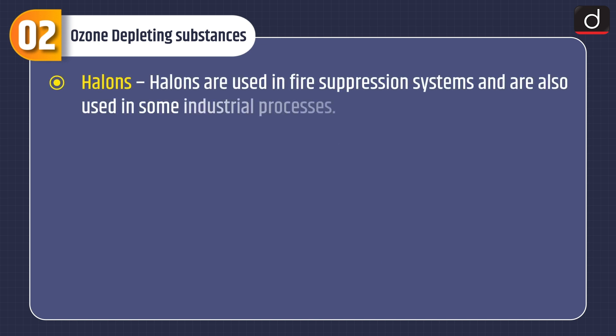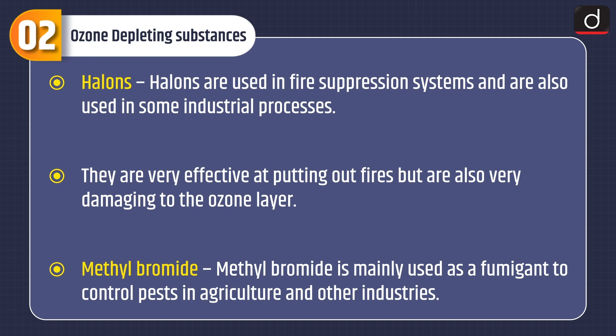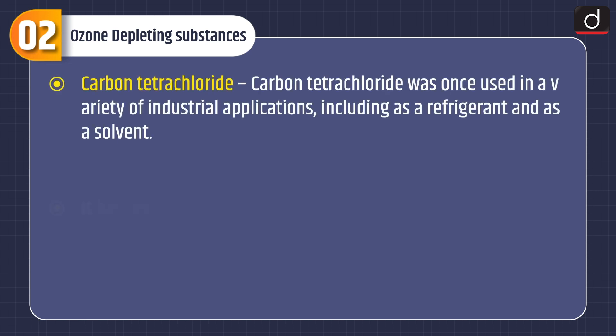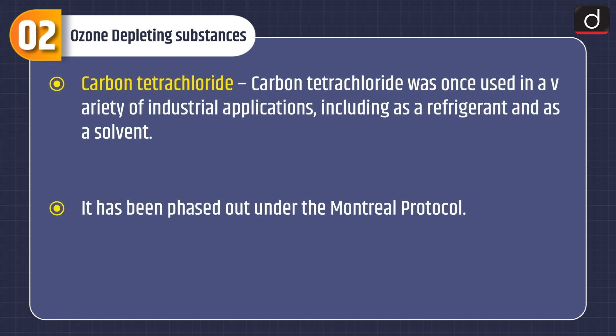Halons are used in fire suppression systems and are also used in some industrial processes. They are very effective at putting out fires but are also very damaging to the ozone layer. Methyl bromide is mainly used as a fumigant to control pests in agriculture and other industries. Carbon tetrachloride was once used in a variety of industrial applications including as a refrigerant and as a solvent. It has been phased out under the Montreal Protocol.